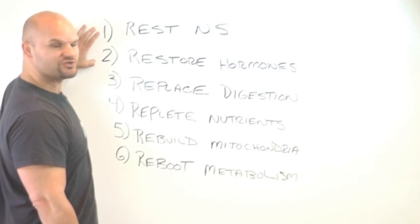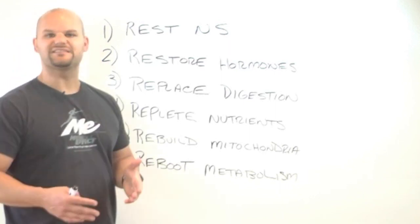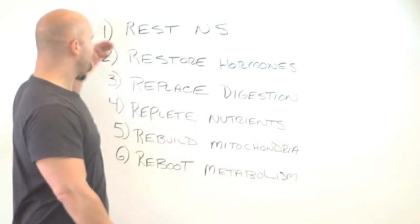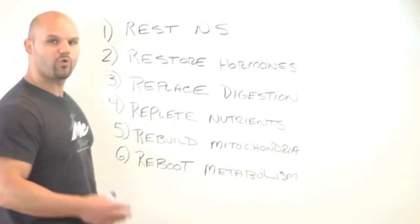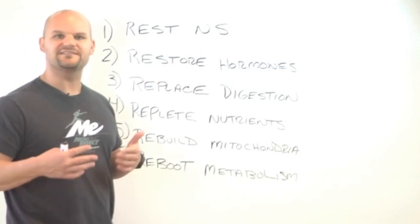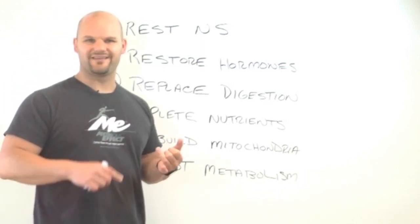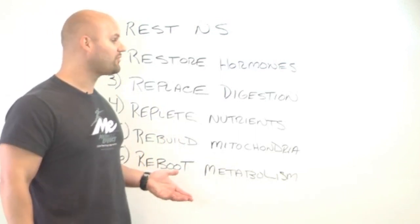Once we get these two, and this is normally where people get stuck, then we can begin to replace some of the digestive capacity. What happens for people is that these things become so dysfunctional for so long, the nervous system and the hormonal system, that the digestive system can no longer digest and assimilate foods. Many people will know this. Many people will feel gas and bloating or sensitivities to foods that they used to tolerate with no problem.